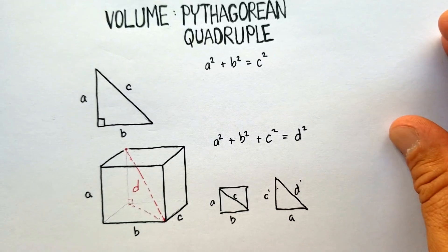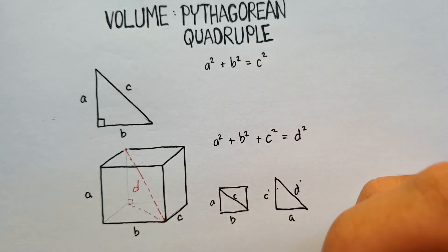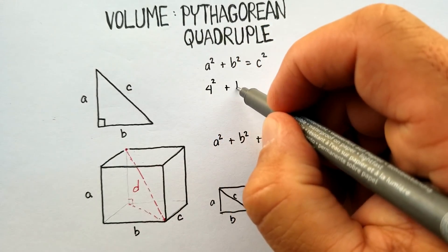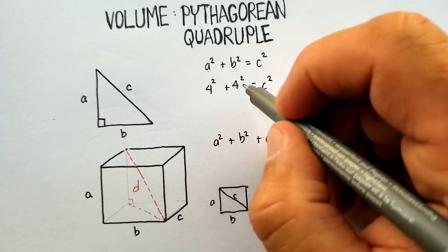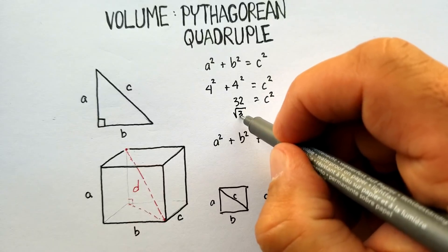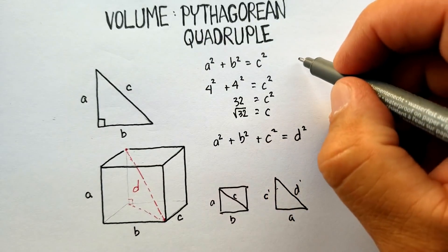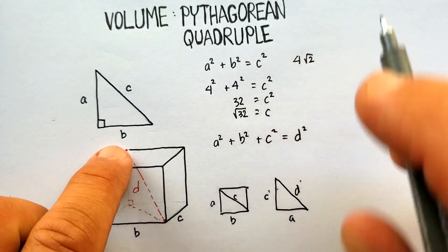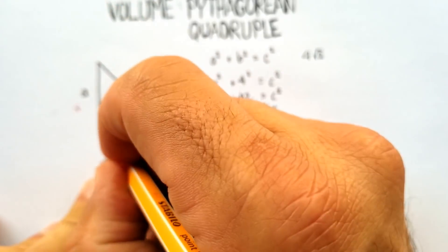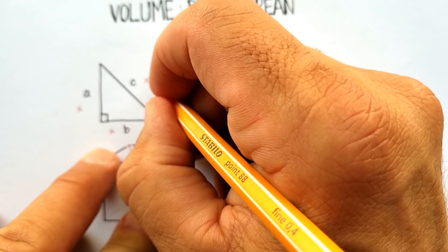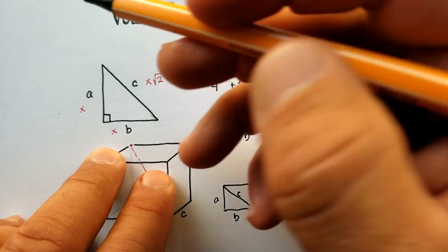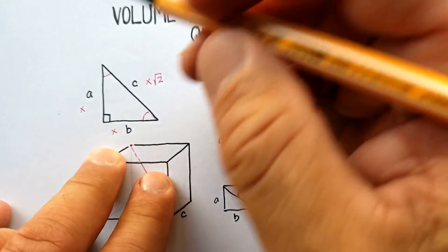Let's put some numbers in and see how it works. Assume this is a perfect square with a = 4 and b = 4. Then a² + b² = c² gives us 16 + 16 = 32, so c = 4√2. And if you remember, that's actually the ratio for 45-45-90 degree triangles, where the sides are x, x, and x√2.